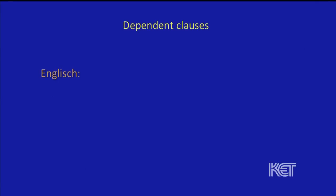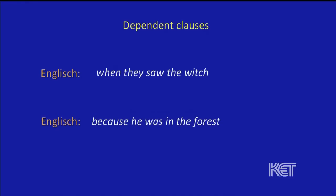Okay, first, Simona, let's look at some examples of dependent clauses that might help — first in English. I'll put the dependent clause up and you read it for me. 'When they saw the witch.' And here's another one: 'Because he was in the forest.' So one reason why we call this a dependent clause is that it can't stand by itself. It's dependent on something else — 'when they saw the witch' wouldn't work on its own.